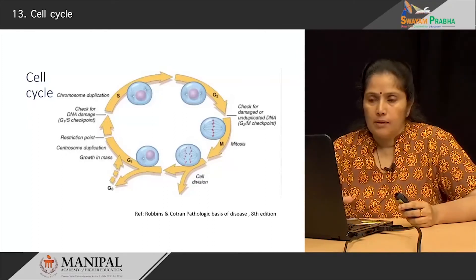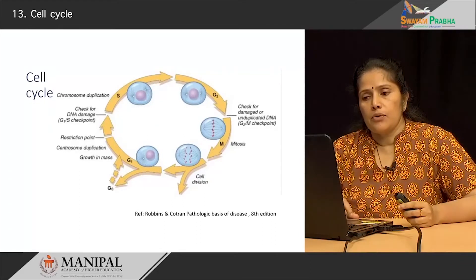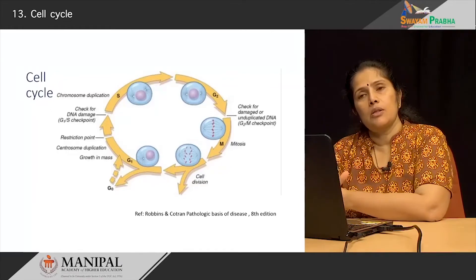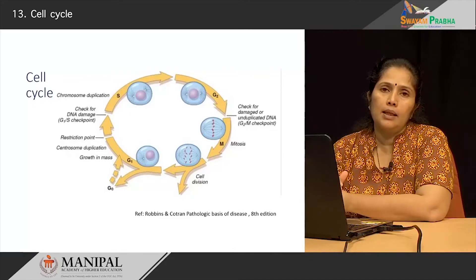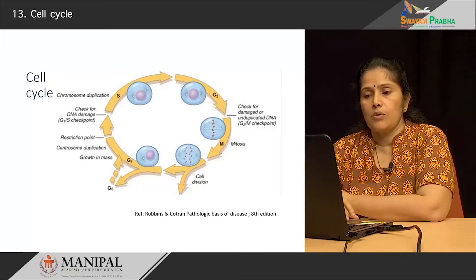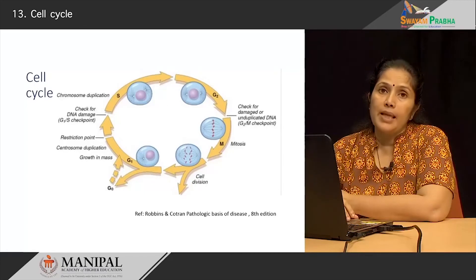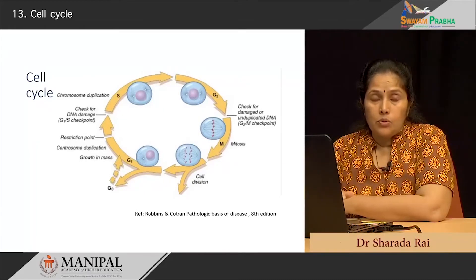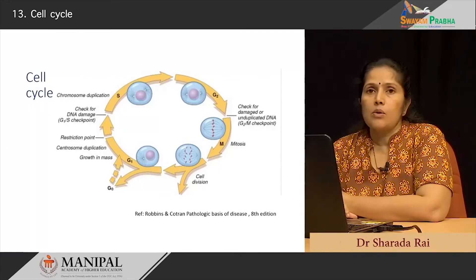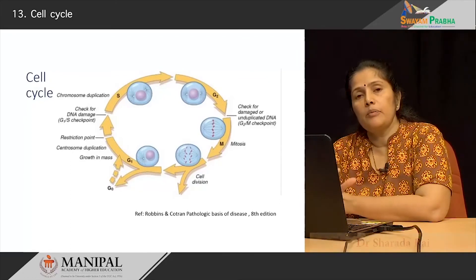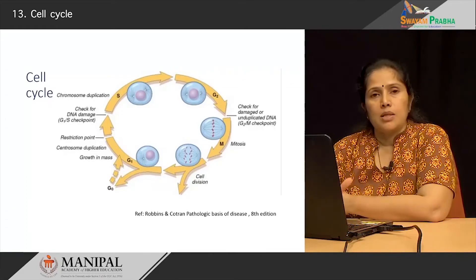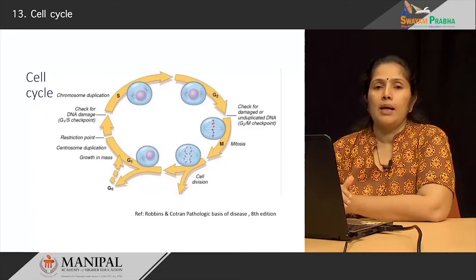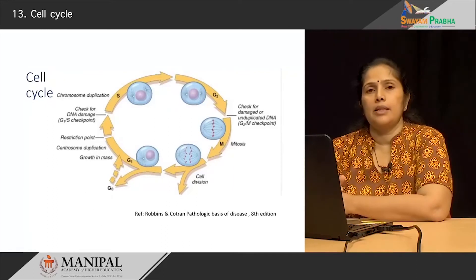In the G1 phase there is increase in mass and duplication of centrosomes. There is a checkpoint for DNA damage before replication occurs — the first checkpoint. Cells then go into the S phase where there is chromosomal duplication. From there cells go into the G2 phase, followed by the G2-M checkpoint to see if replicated chromosomes are normal — a checkpoint before mitotic division occurs to verify the genome is intact. After mitosis the cell may become quiescent or re-enter the cell cycle.